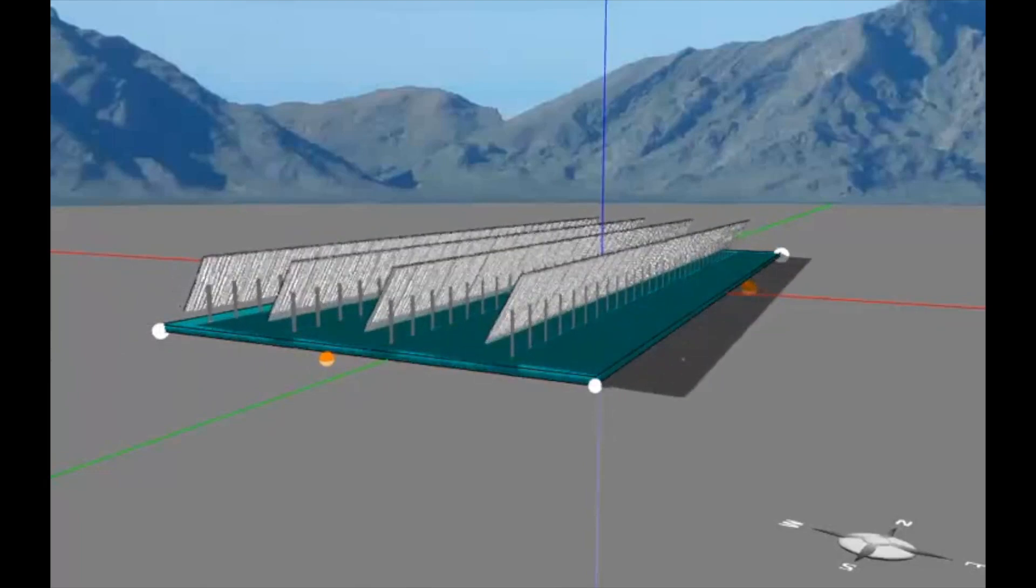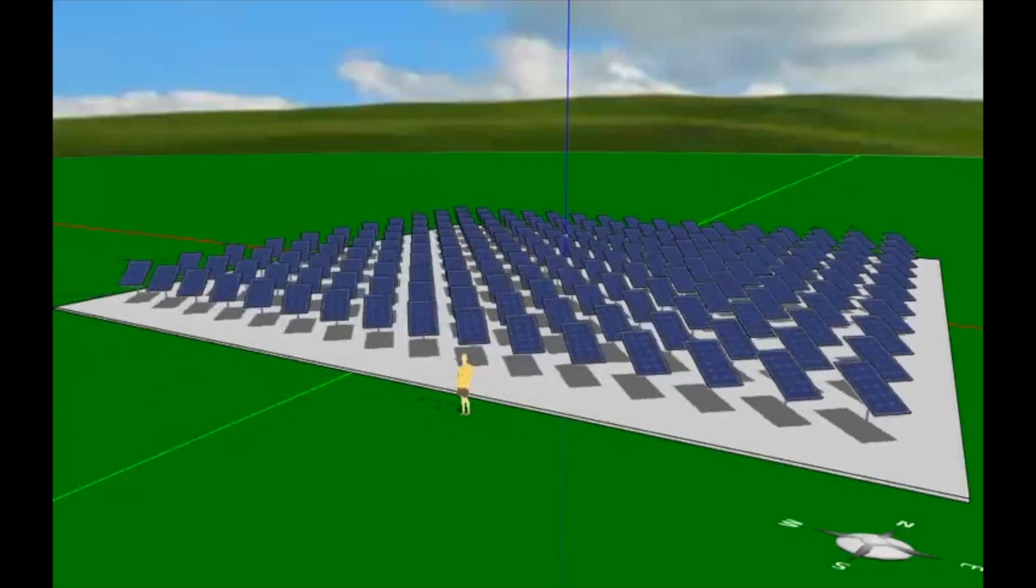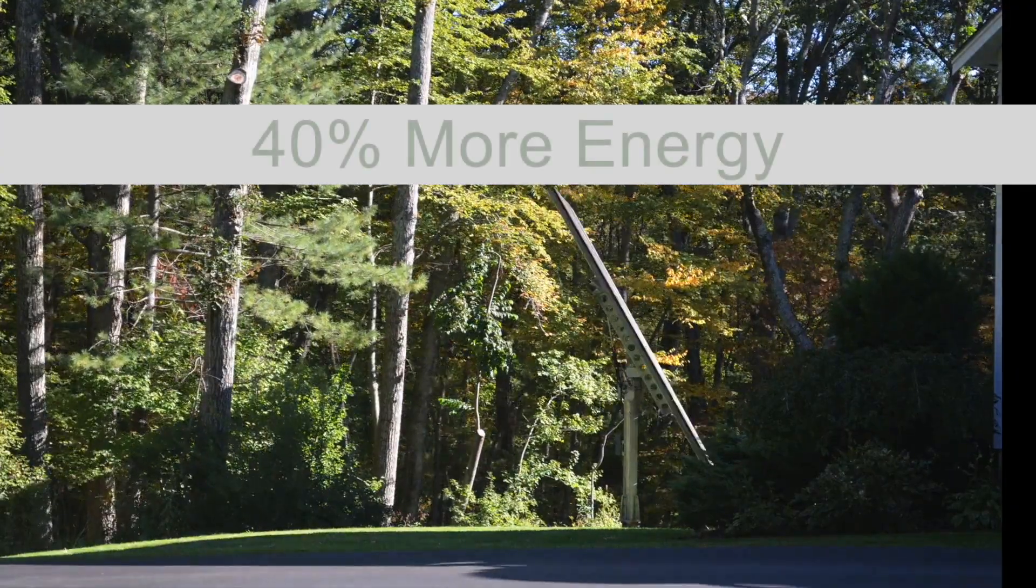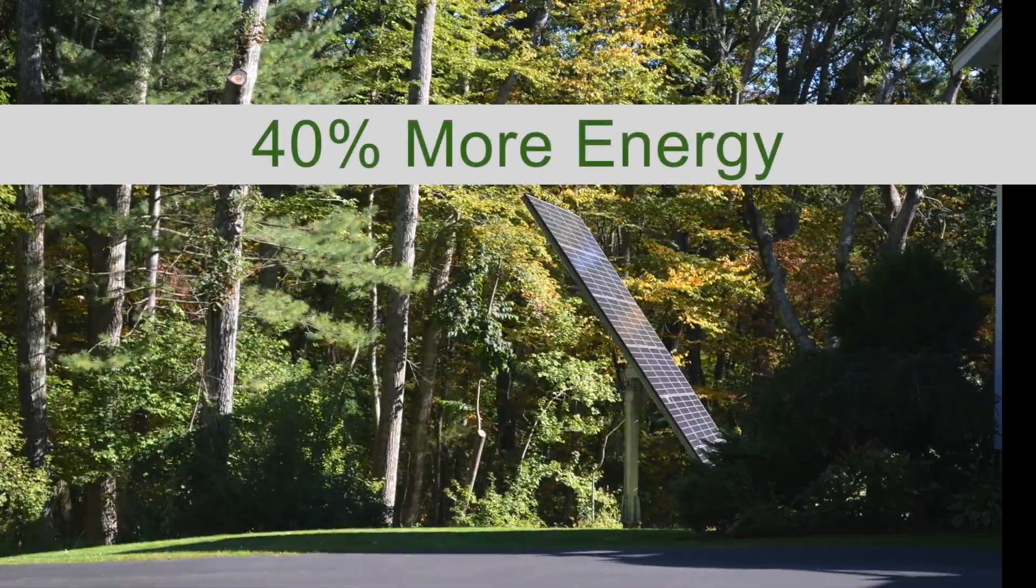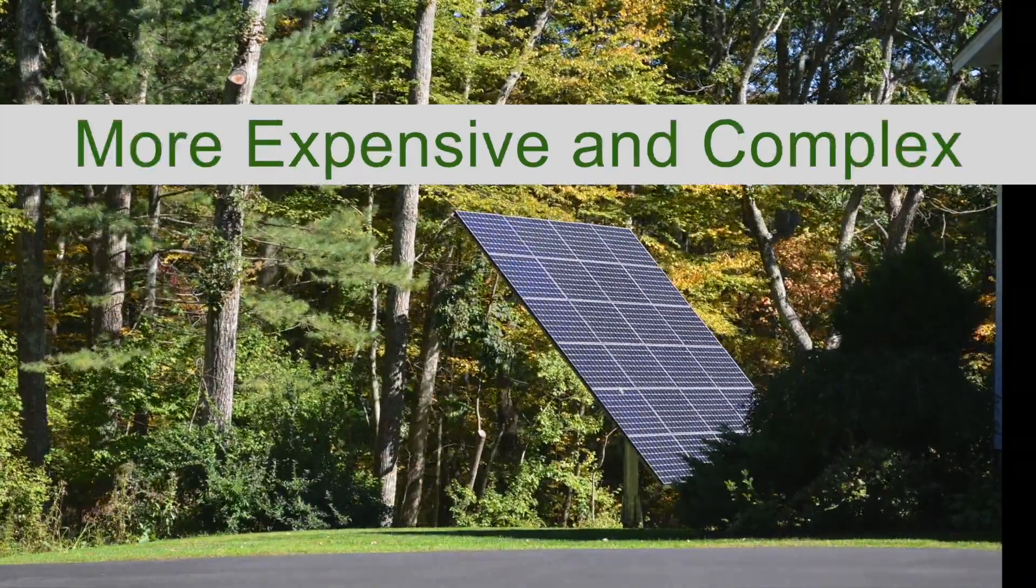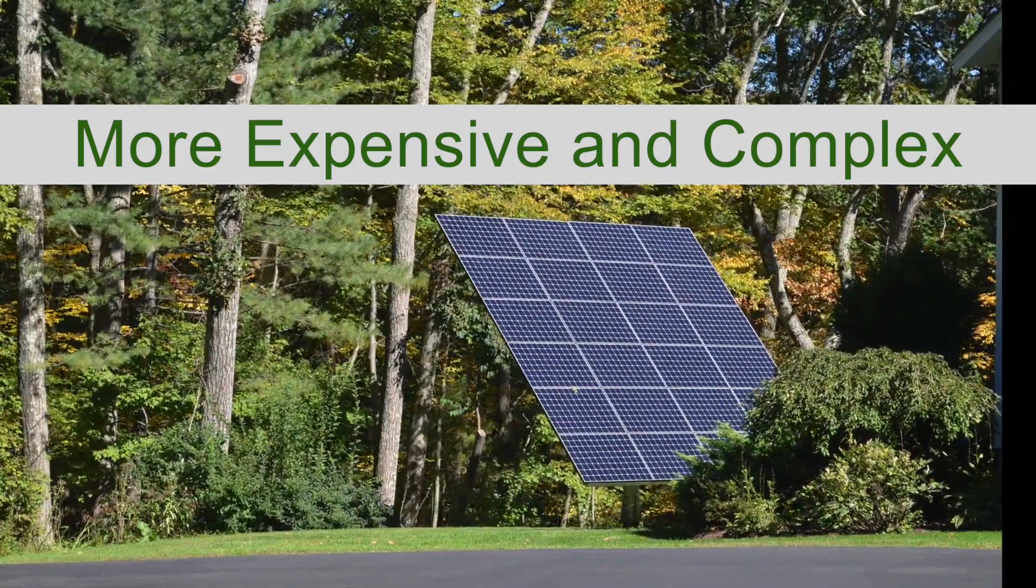This is an animation of a one-axis tracker and this is a two-axis version which provides even more solar power. Trackers can provide up to 40% more energy than a standard fixed rack however they're more expensive and require more maintenance so you have to calculate the return on investment.